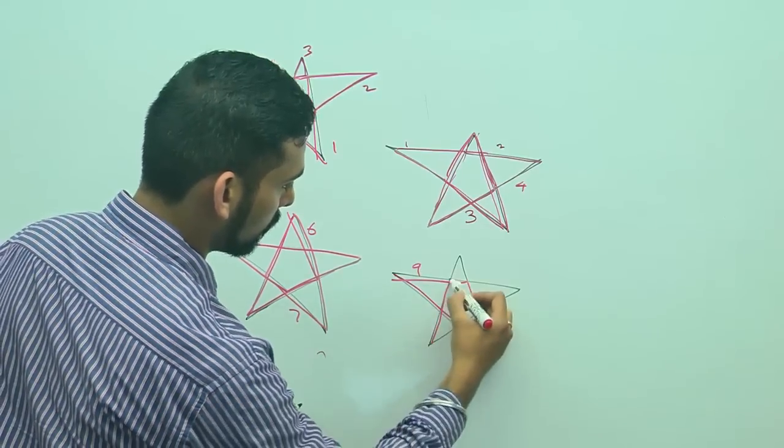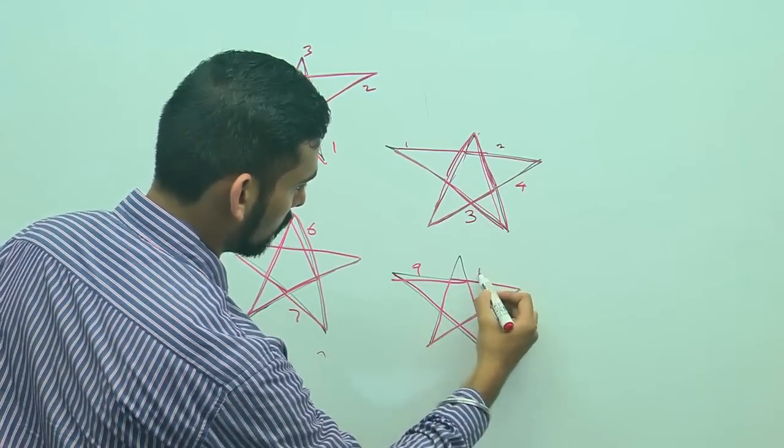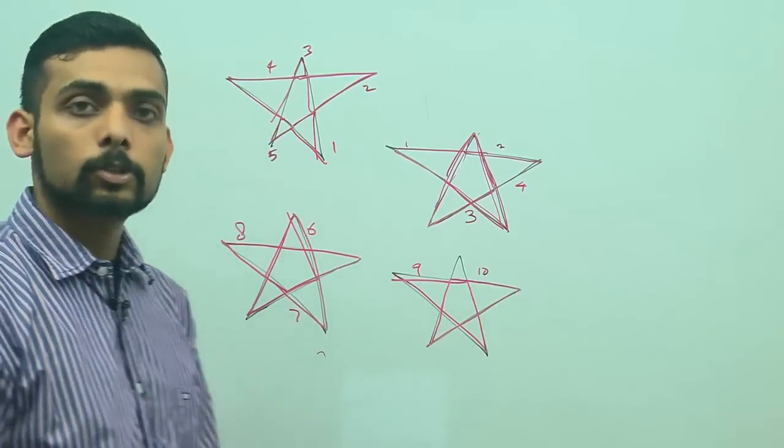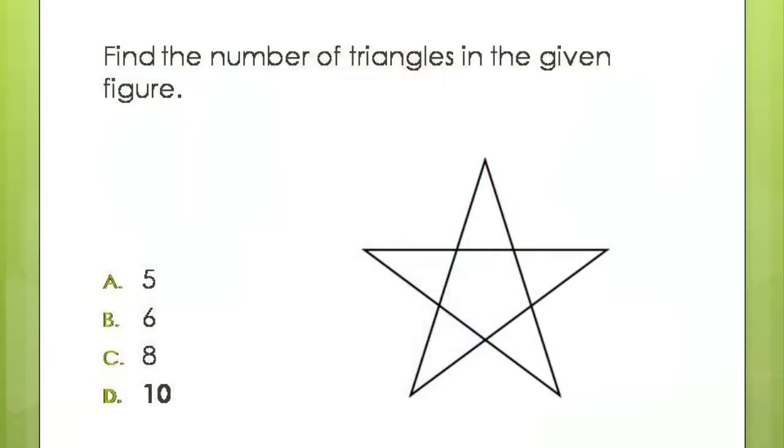Similarly, this side we have triangle number 10. So, totally there are 10 triangles embedded in this figure.